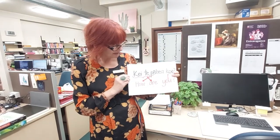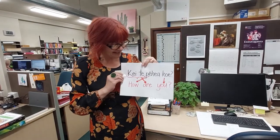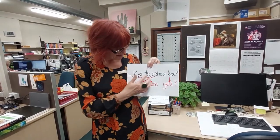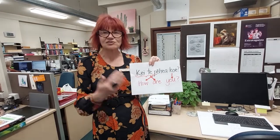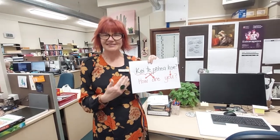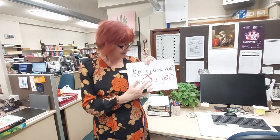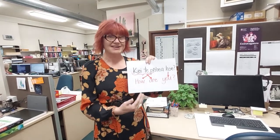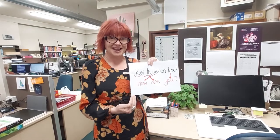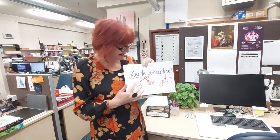If we look at this, the 'ki te' part of the sentence is talking about when it's happening — it's a tense marker. So we're talking about now: how are you? I'm not asking how were you or how will you be, I'm talking about now. Ki te.